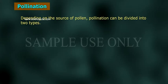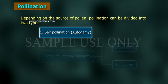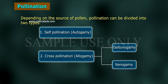Depending on the source of pollen, pollination can be divided into two types. One: self-pollination, also called autogamy. Two: cross-pollination, also called allogamy.